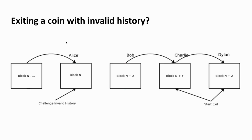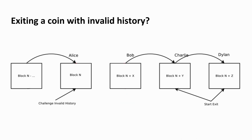The most involved case requires operator maleficence. There is no transaction from Alice to Bob — the operator, who defines the state of the Plasma chain, just ignores Bob's ownership. So if at any time Charlie or Dylan try to exit the coin, Alice can do the invalid history challenge, attesting that she is the latest owner. To respond to this challenge, somebody must provide a connection in the history chain. If Alice is an honest party, she would never challenge if she knew there was no response available.